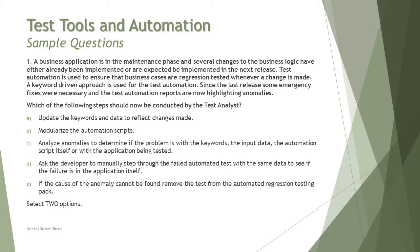Option B is to modularize the automation script — that is not a responsibility of the test analyst, so B can be ruled out. Option C is to analyze the anomalies to determine if the problem is with the keywords, the input data, the automation script itself, or the application being tested. This particular statement was covered in the tutorial related to keyword-driven testing, so C is also one of the valid options.